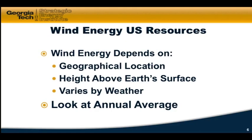Wind varies by weather — if you get a stormy condition, you get high winds; if it's calm, it's calm. You have differences in night and day because of the solar heating of the Earth, and of course by different geographical locations. The averages also vary from winter to summer. The average wind speed is generally higher in the winter than the summer in almost all regions.